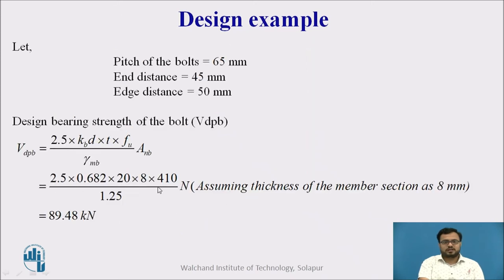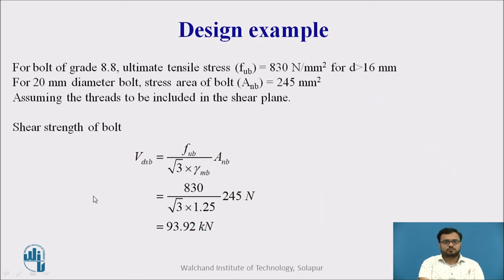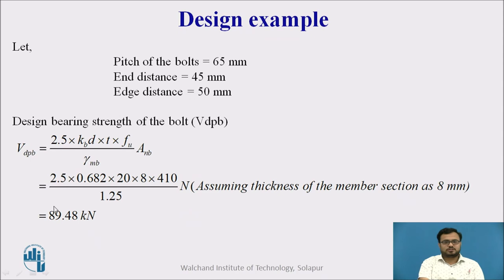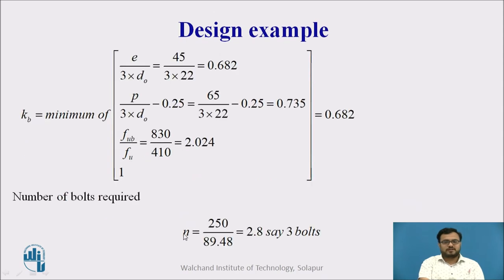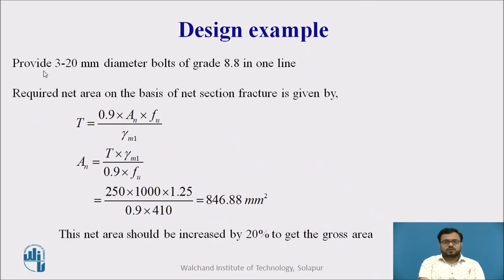We use that value, then diameter, then thickness. Here we assume the thickness of the member. FU equal to 410, then area divided by gamma MB. We get the value as 89.48. Then we will take the lesser of these two, shear strength as well as bearing strength. So the lesser is 89.48. Number of bolts equal to the given factored force divided by 89.48, which is equal to 3. We will provide it in a single line, all the 3 bolts.